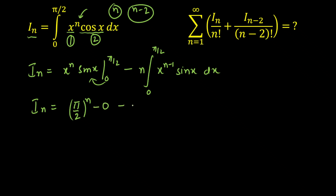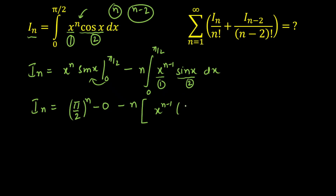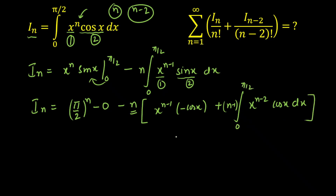Now we have n·x^(n-1)·sin(x) remaining. Since we want power n-2, I will apply integration by parts again, taking x^(n-1) as first and sin(x) as second. So n times: [x^(n-1) · (–cos x)] evaluated from 0 to π/2, minus the integral of (n-1)·x^(n-2)·(–cos x) dx from 0 to π/2, which simplifies to plus n(n-1) times the integral of x^(n-2)·cos(x) dx.